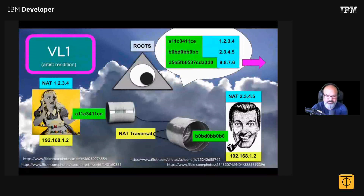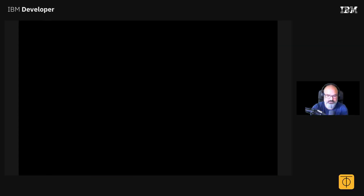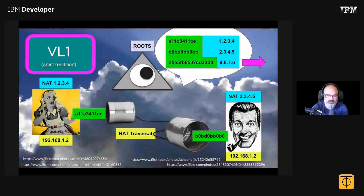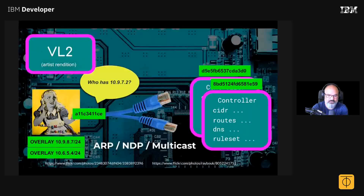VL1 just sets up the connection — it's a peer-to-peer network. VL2 you can think of as like VXLAN. In VL2, you have this overlay IP, so let's say 10.9.28.7.